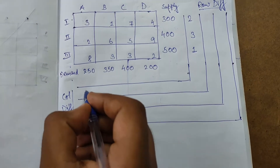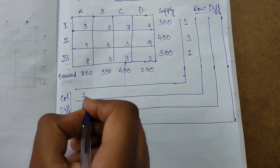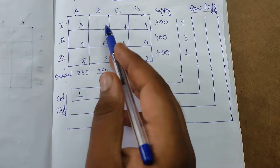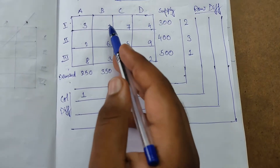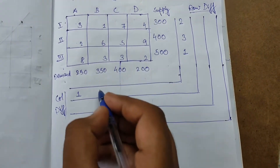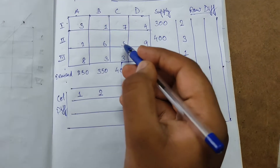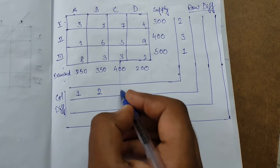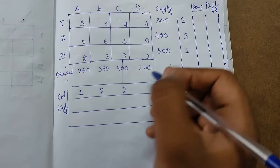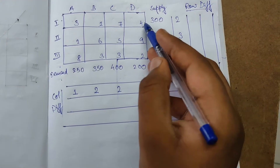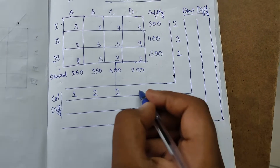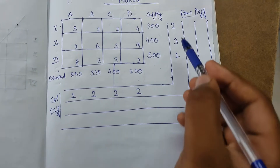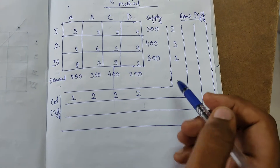Now for column differences: in the first column, the least two elements are three and two, difference is one — write one. In column B, one and three gives a difference of two. In the next column, five and three gives two. And two and four gives a difference of two.